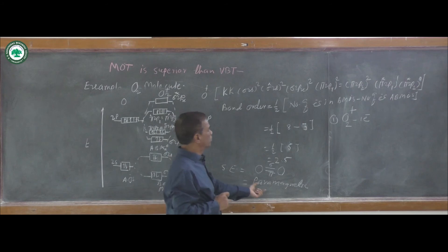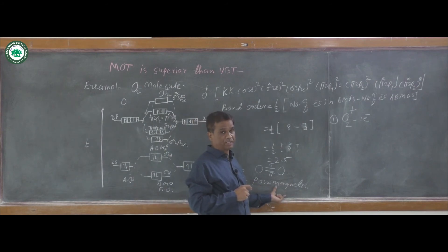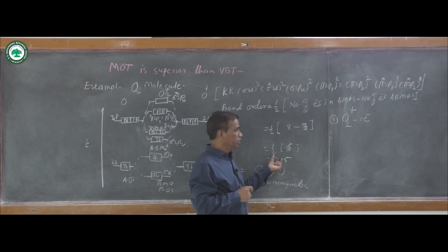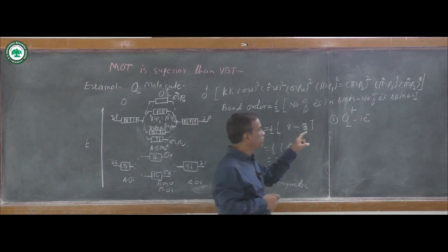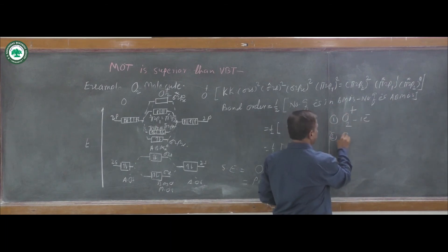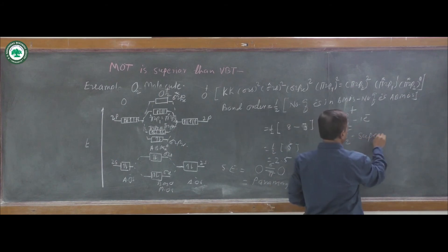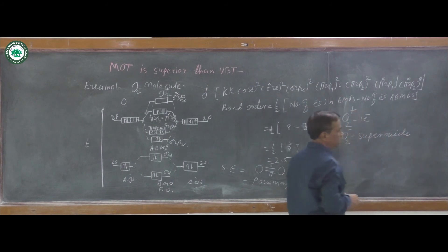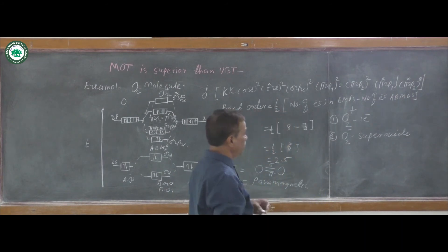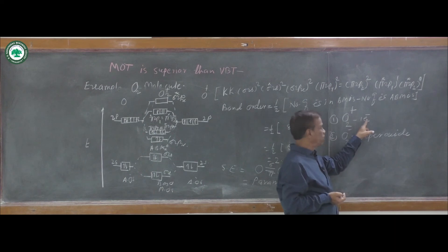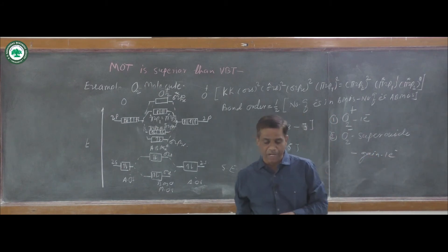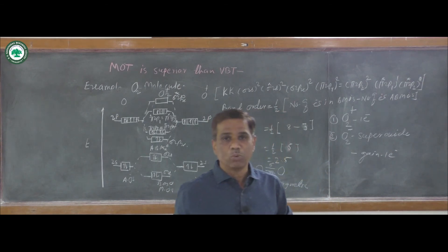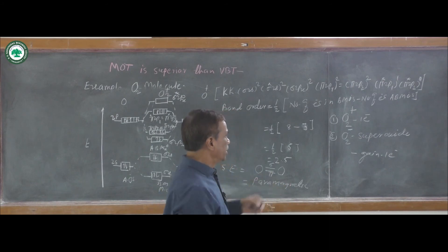There is one unpaired electron, therefore O2+ is paramagnetic in nature. The second oxygen ion is O2- (superoxide). O2+ is formed by loss of one electron, and O2- is formed by gain of one electron. O2- is called superoxide.